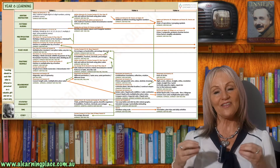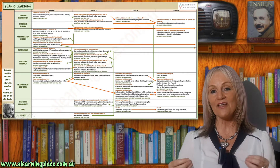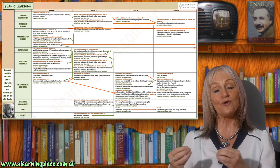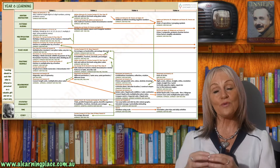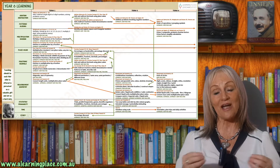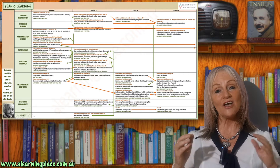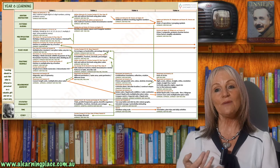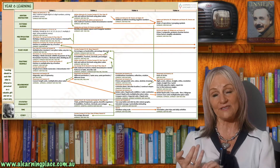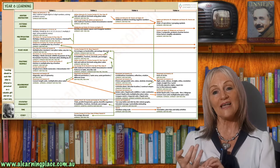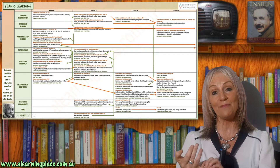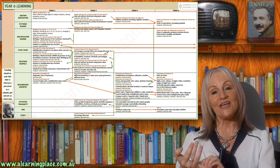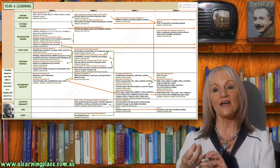In term four of year six, children will be investigating the order of operations. The order of operations are not mathematical — they're just conventions that we all follow. If we didn't, we'd all get different answers to our equations. They'll start using grouping symbols if they want to change the order of operations. They'll also be investigating prime and composite numbers and describing composite numbers as the product of prime factors, then using this to simplify calculations.